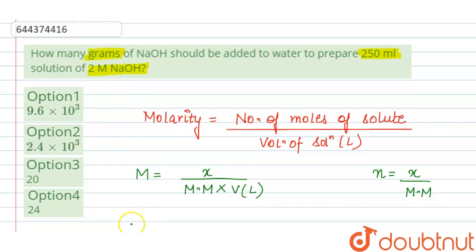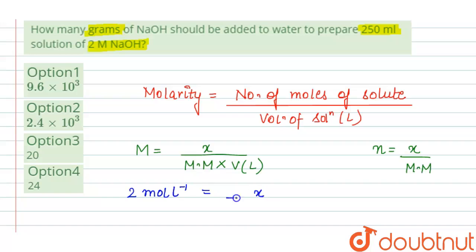This equals x, which is the mass of solute. So we have to find out this x, which is mass of NaOH. So x divided by the molecular mass of solute...